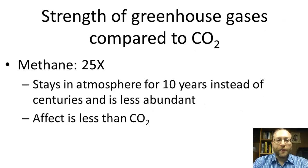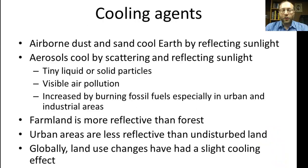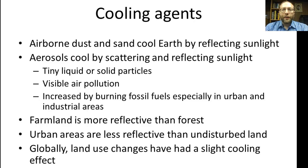Methane is a very strong greenhouse gas — 25 times that of carbon dioxide — but it stays in the atmosphere for only about 10 years instead of centuries, and it's less abundant, so its effect is less than carbon dioxide. There are also anthropogenic cooling agents. Airborne dust and sand cool the Earth by reflecting sunlight, though these are largely not anthropogenic. Aerosols — tiny liquid or solid particles that are the visible part of air pollution — cool by scattering and reflecting sunlight, and are increased by burning fossil fuels in urban and industrial areas. Farmland is more reflective than forest, so cutting down forests to make farmland has a slight cooling effect. Overall, land use changes have had a slight cooling effect globally.